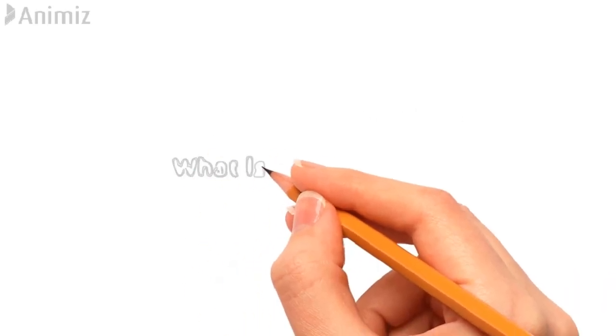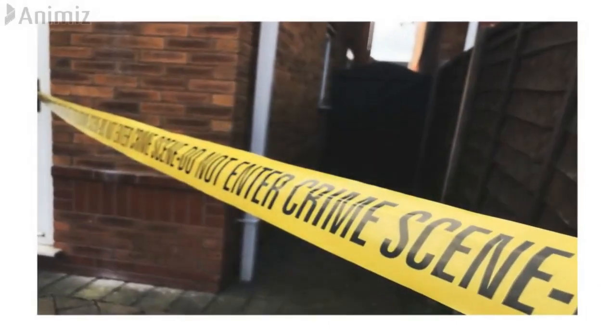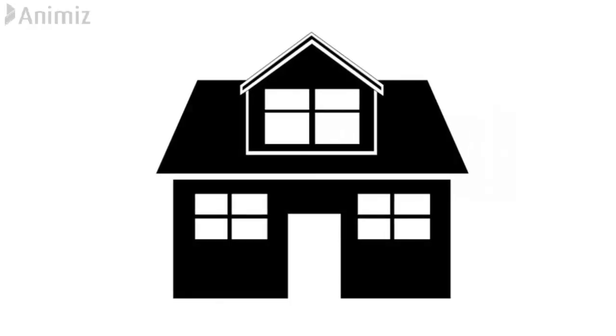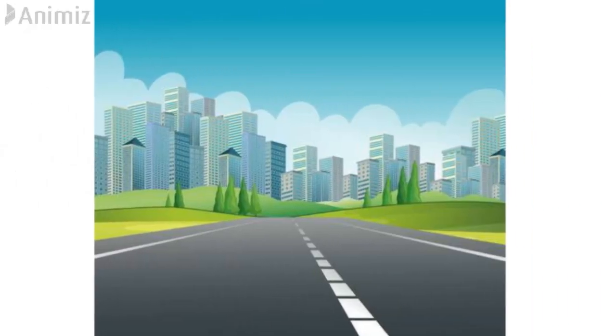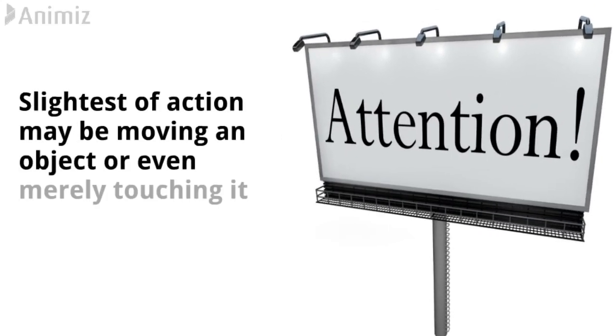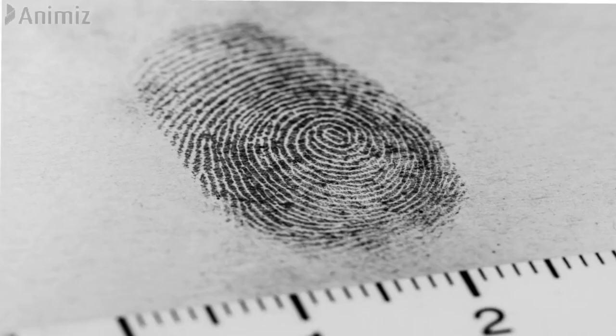To start with, let us first understand what is a crime scene. Any place where a crime was committed is a crime scene, and any object present at the crime scene which might be very ordinary before commission of crime is a crucial piece of evidence. It can be a house, a road, or even a vehicle. The most important issue with crime scene investigation is that even the slightest action — moving an object or even merely touching it — might result in loss of evidence such as fingerprints or blood spatter evidence.